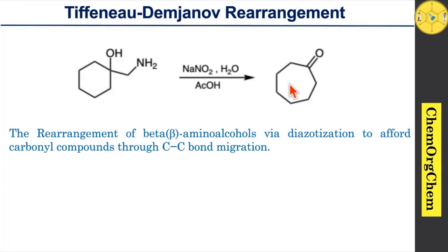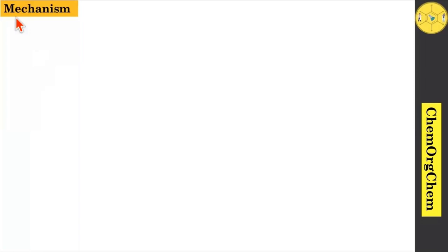This reaction takes place by initial diazotation of the amine group, then followed by carbon-carbon bond migration which leads to produce the corresponding ring-expanded carbonyl compounds. In the place of sodium nitrite in acetic acid we can use nitrous acid also. The mechanism of Tiffano-Temchanow rearrangement is just similar to Temchanow rearrangement since most of the steps are similar.